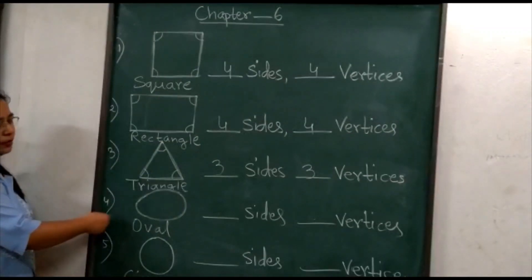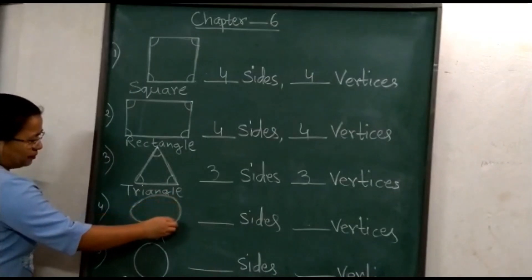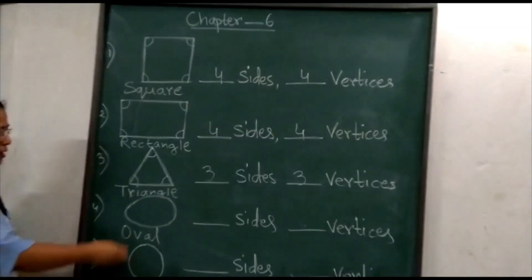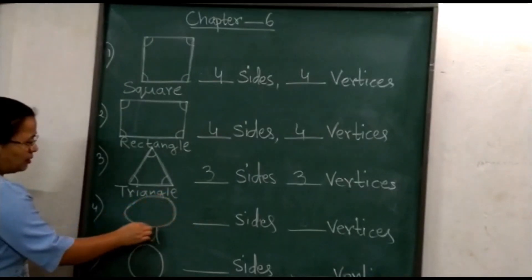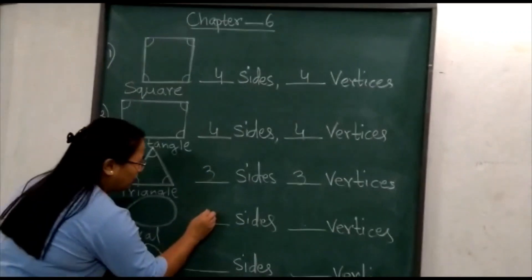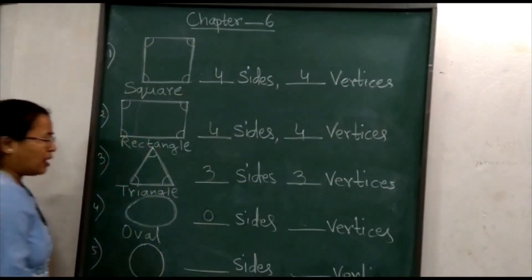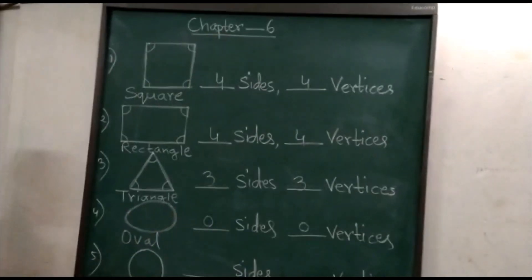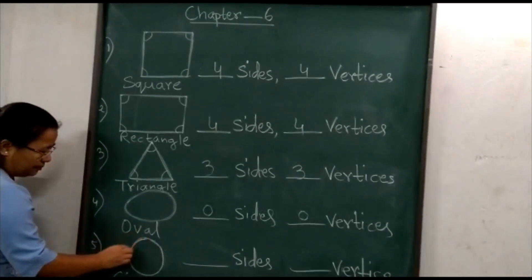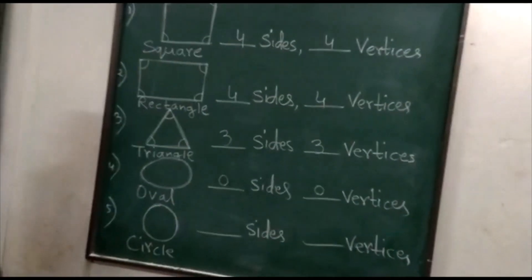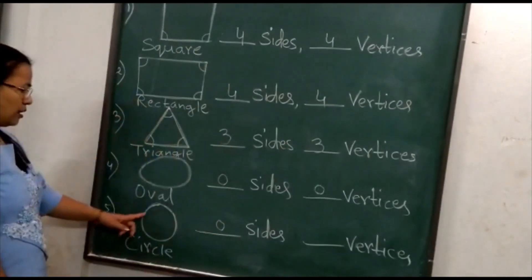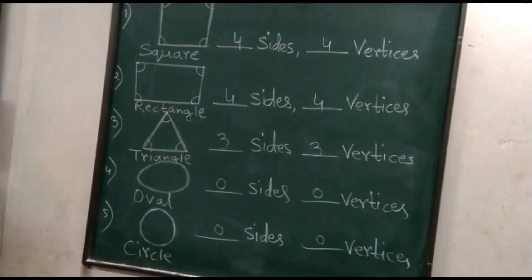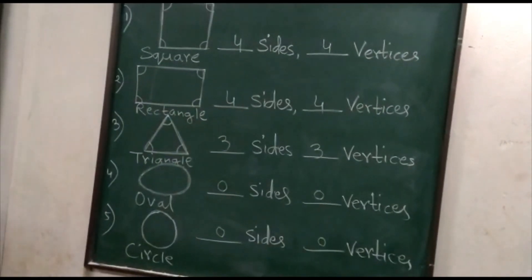Now number 4, oval. This is an oval. Oval does not have any sides. So oval has zero sides and zero vertices. Now let's come to circle. This is a circle. A circle has no sides and no vertices — zero sides and zero vertices. A circle is round in shape.